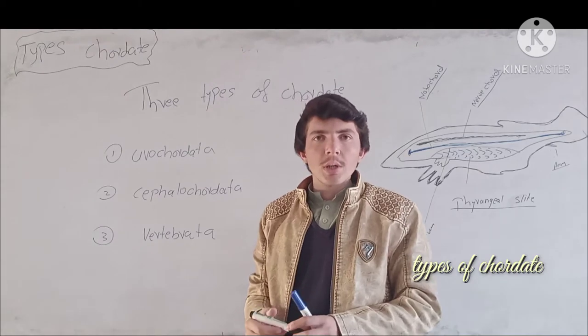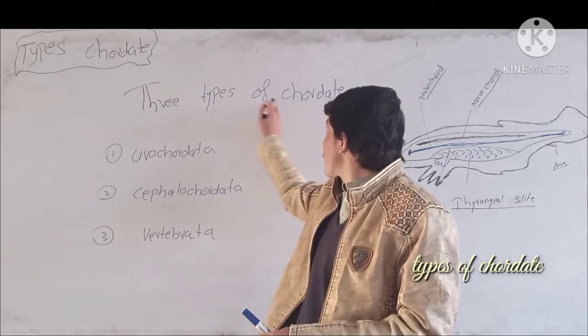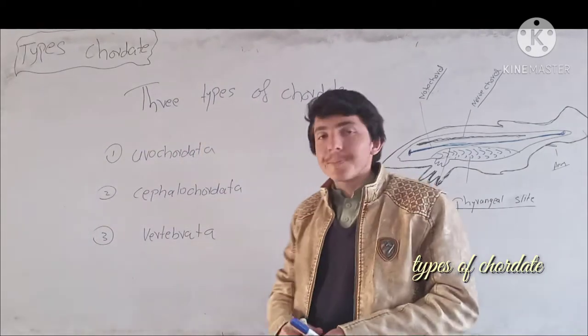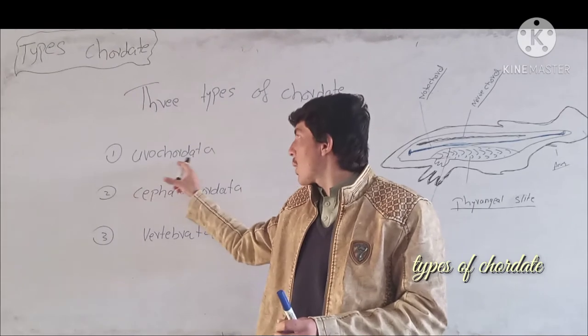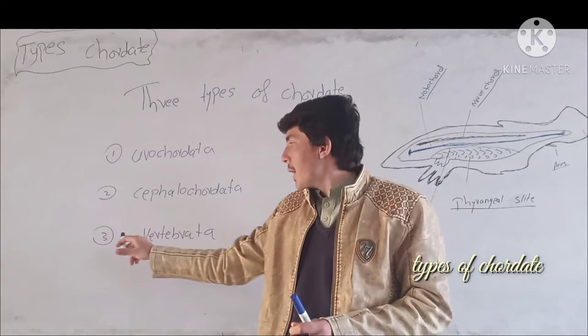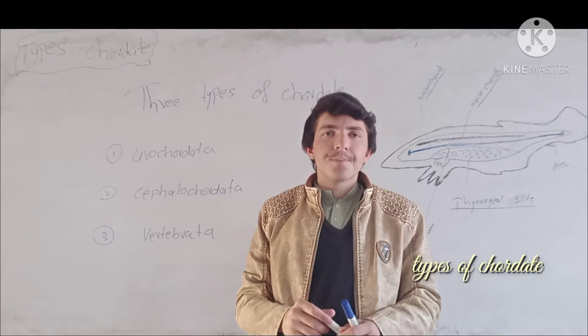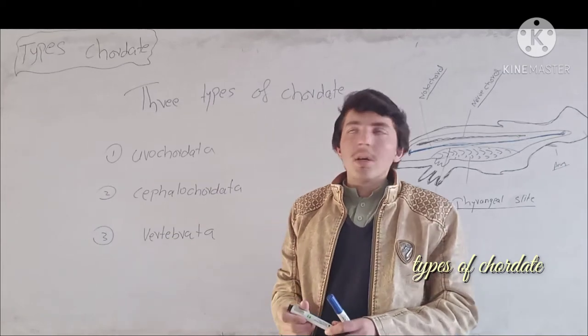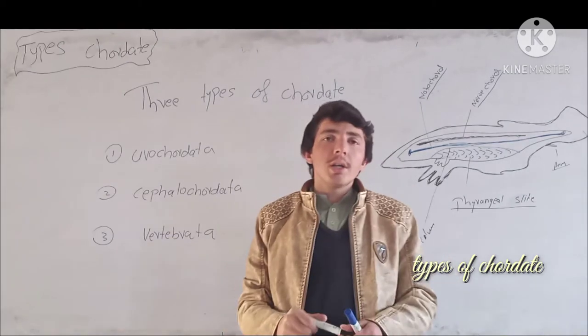You know that there are three types of coordinates. First one is Uro-coordinator, second is Cephalo-coordinator, and third is Vertebrata. These are the three types of coordinates.